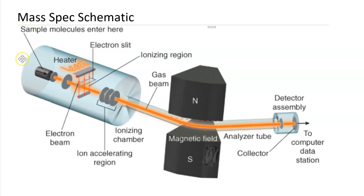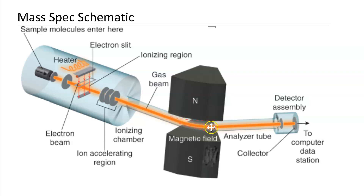Here's a mass spec schematic. Sample molecules are injected, then they're heated by a coil and passed through a slit. Then the electron beam is passed through the sample beam, and ionization and fragmentation takes place there. Then a series of charged plates with a slit in them cause acceleration of the fragments, and so the fragments pass through a magnetic field.